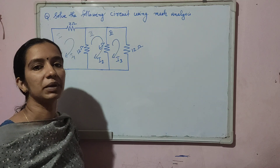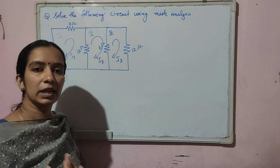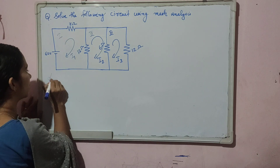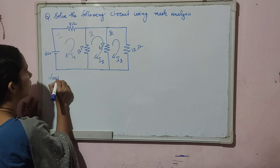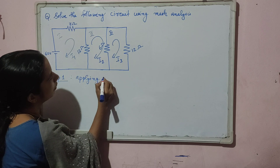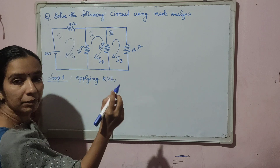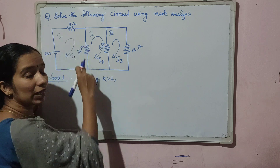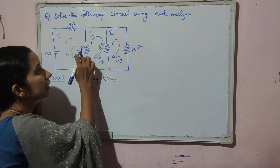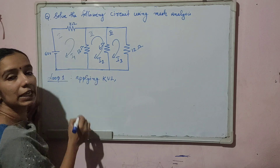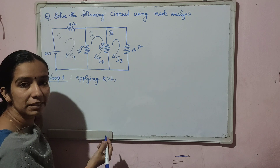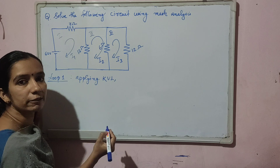After marking the currents, consider each mesh individually and apply Kirchhoff's Voltage Law. For loop 1, we apply KVL by tracing the circuit in the clockwise direction, starting from a particular point. When moving in this direction, we go from the negative terminal to the positive terminal of the battery, so there is a rise in potential and the battery voltage is marked as positive: +60.